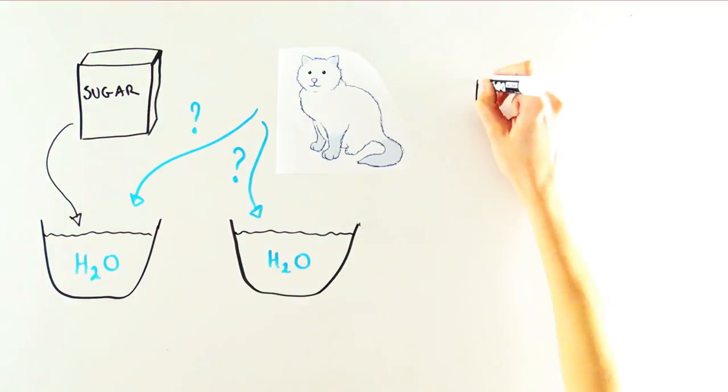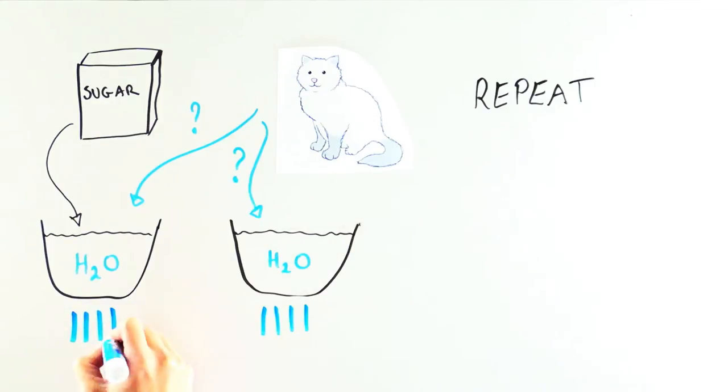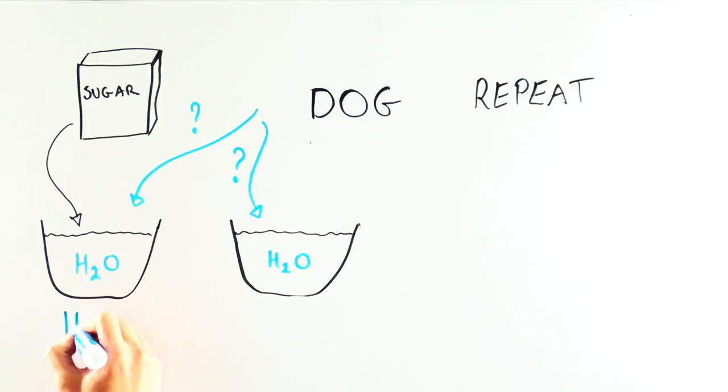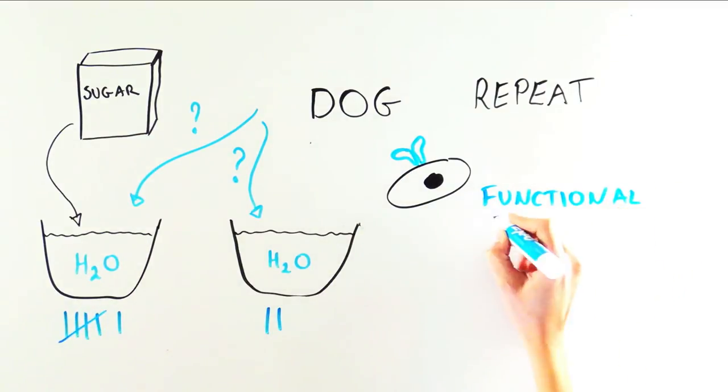Let your cat decide which water it finds the most enticing, and keep track of how long it spends sipping the sugar water and how long it spends sipping the regular water. Tally up your data. Your cat should not be able to tell a difference between the two and should spend equal amounts of time at either bowl. Have a dog perform the same experiment and watch your dog go crazy for that sugar water. Yes, dogs still have a fully functional sweet receptor.